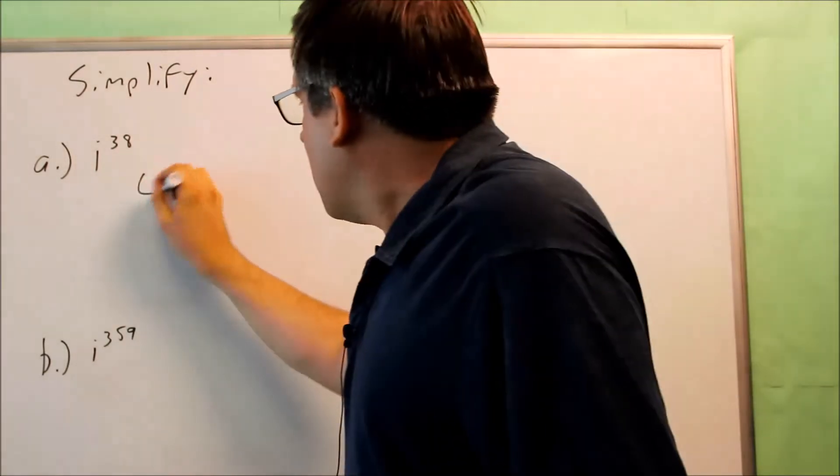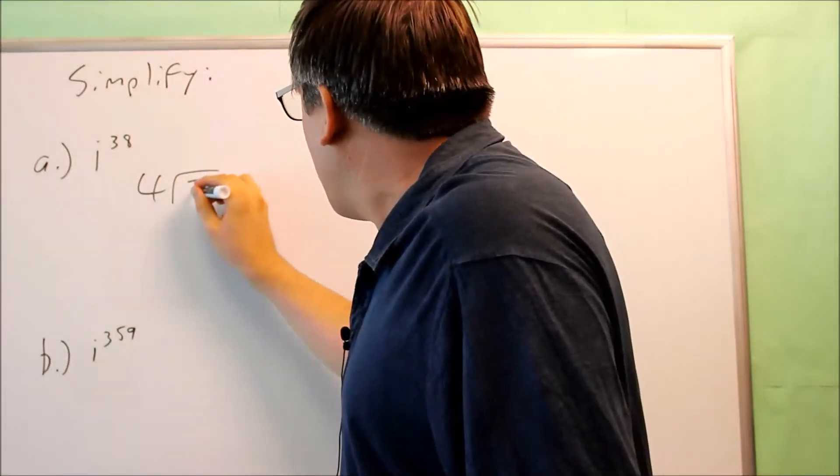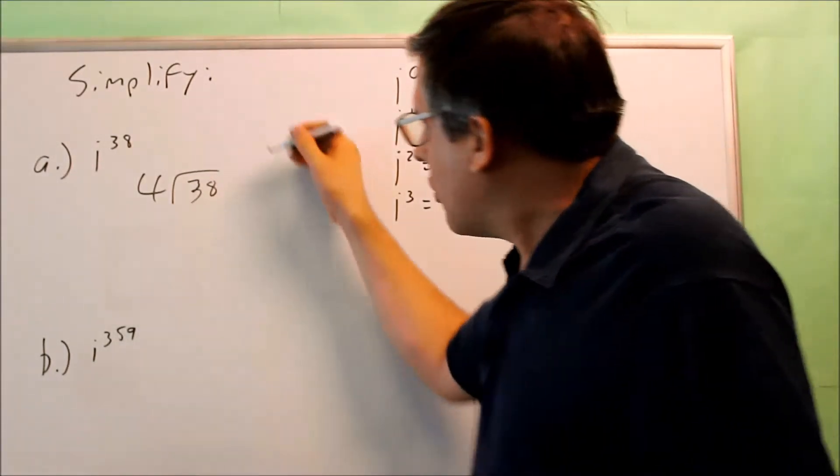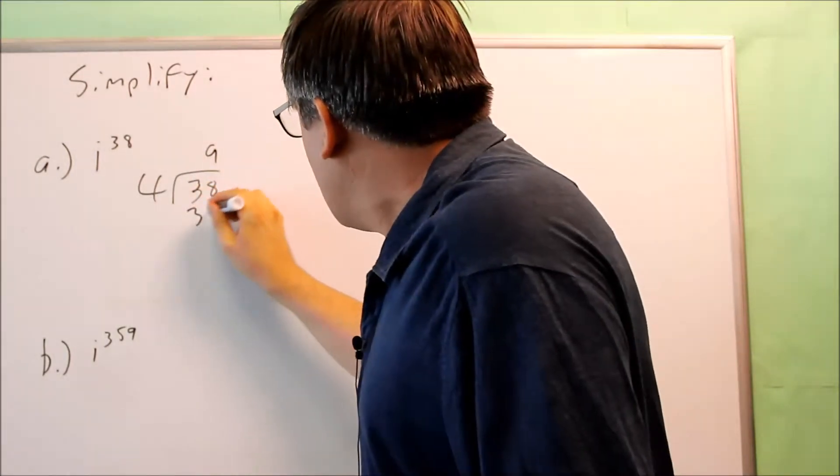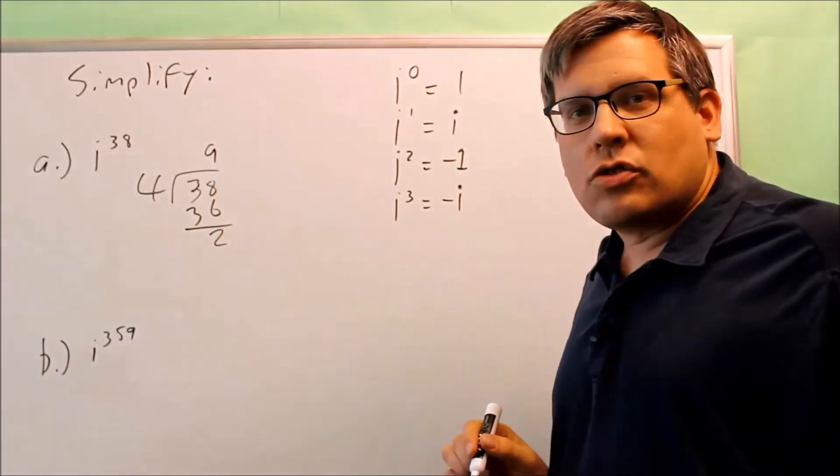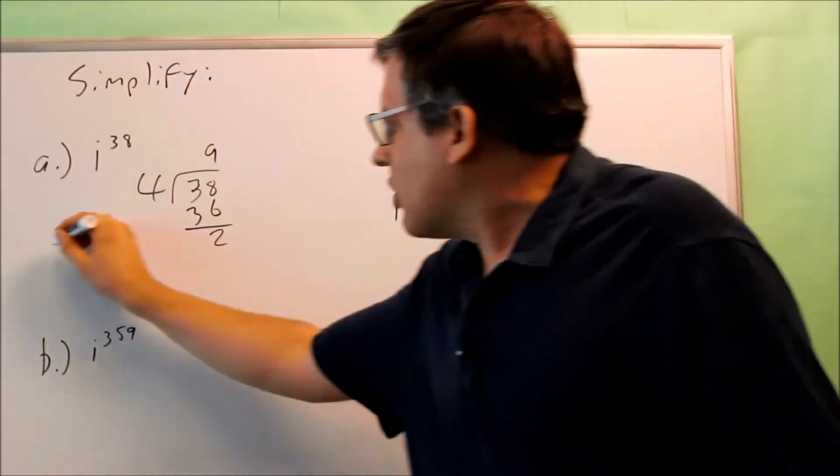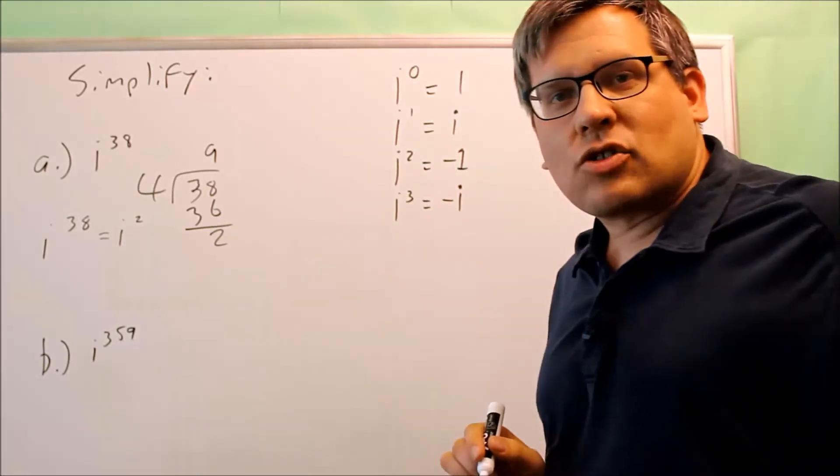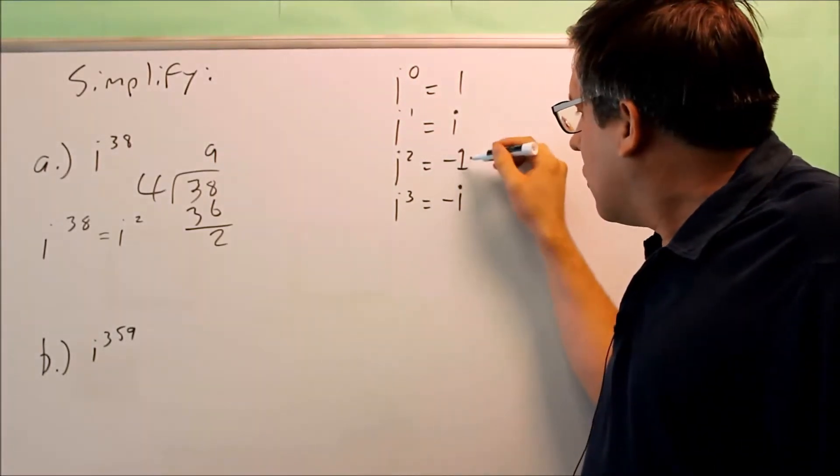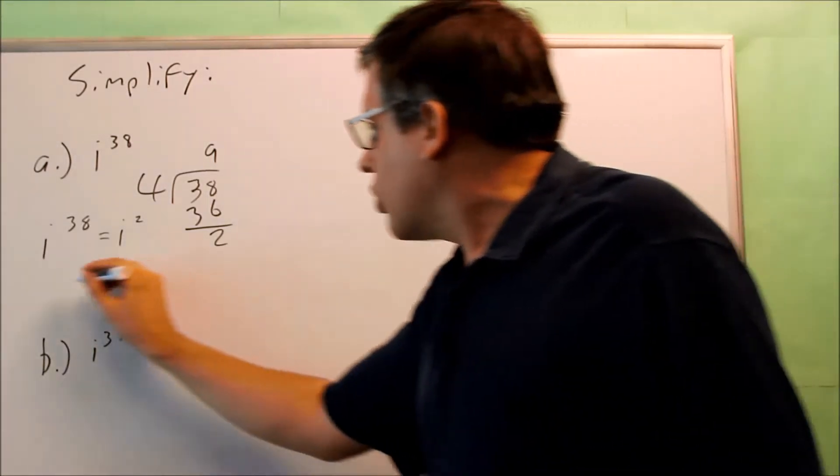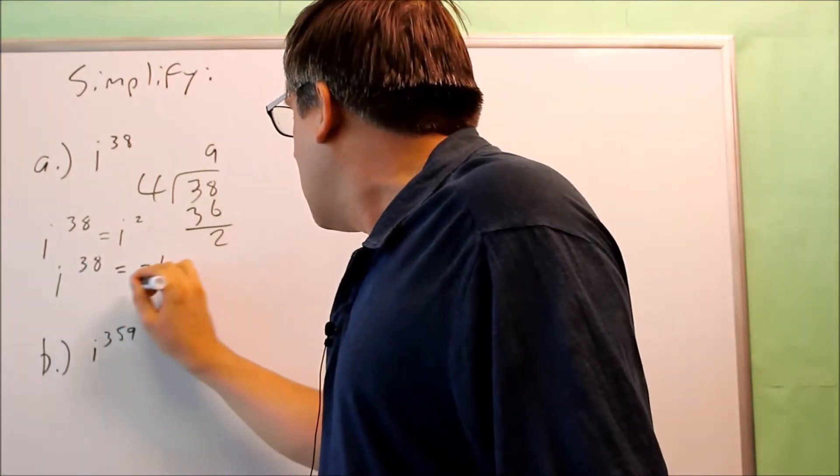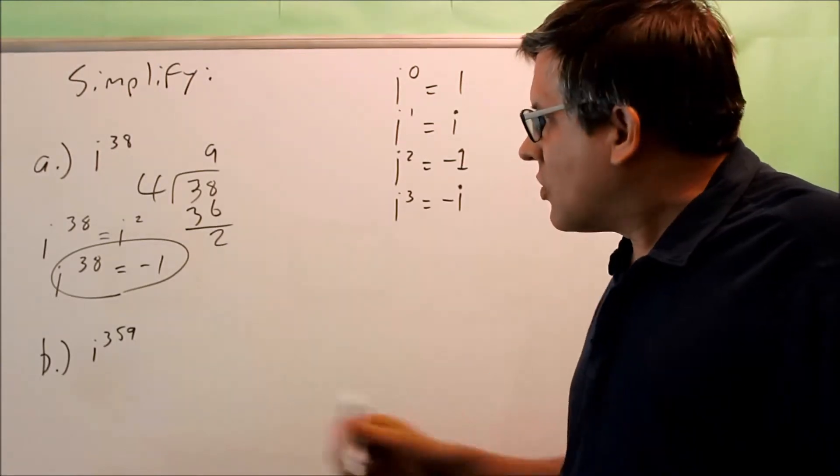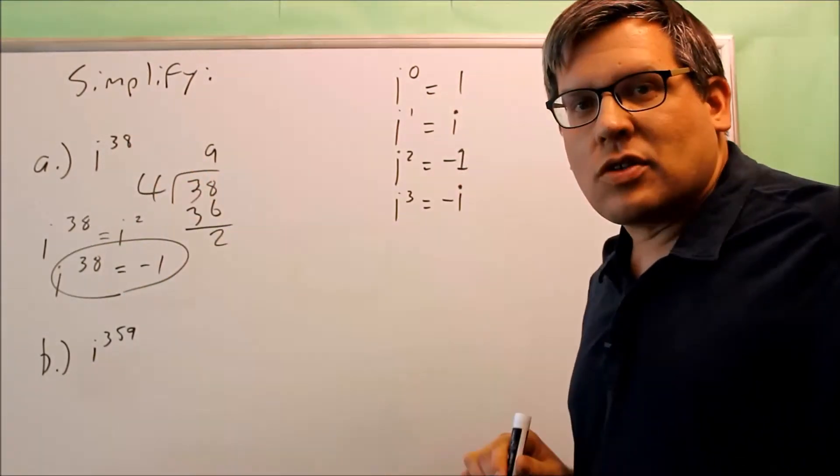So we're going to take 38 and divide it by 4, just like this. And we want to just get the remainder. So if 4 goes into 38 nine times, when we subtract, we get a remainder of 2. So what that means is that I can take i to the 38th power and I can write that as i squared. And i squared, that's equal to negative 1, which means that i to the 38th power can be written as negative 1. That's how that would simplify. So instead of i to the 38th, we can write negative 1. It means the same thing.